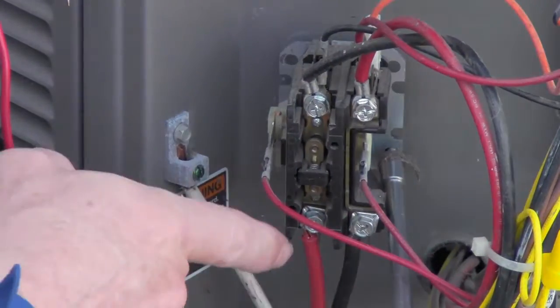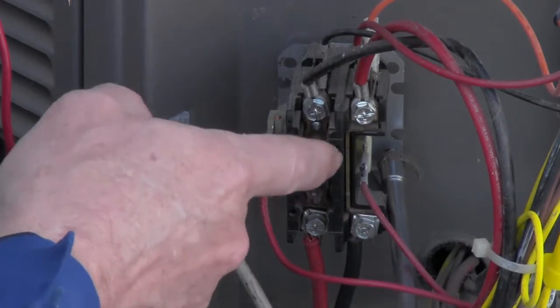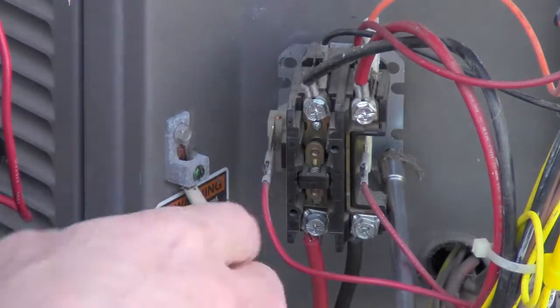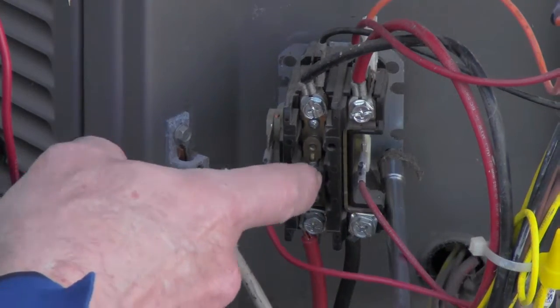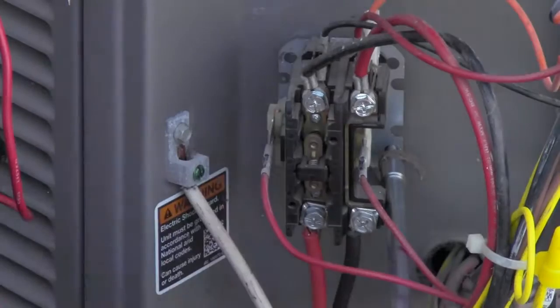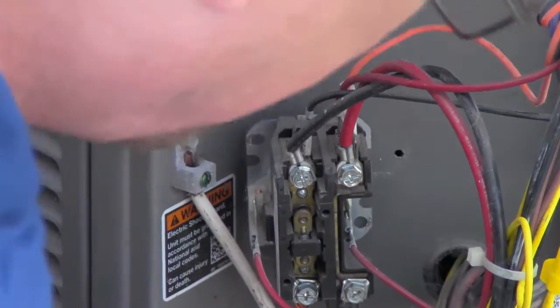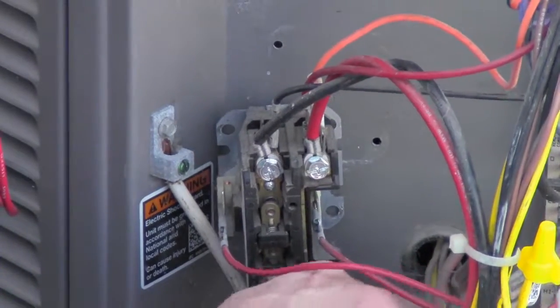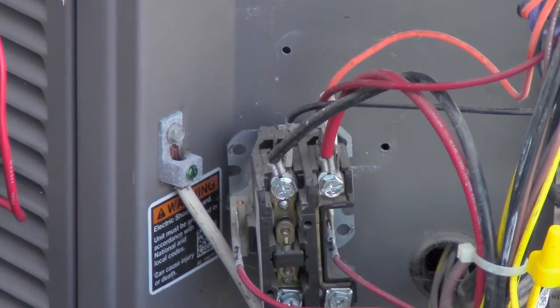And as you notice, somebody took the cover off of this. It's supposed to have a cover on it to keep bugs and dirt and stuff like that out of it. That way when this is engaged it doesn't pull in and trap a lot of that stuff inside the contacts. So let's go ahead and put those there.